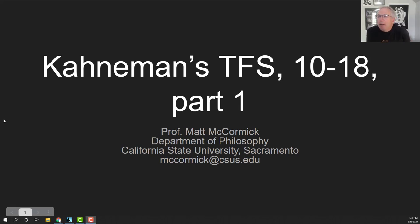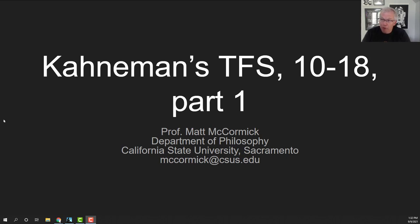Hi, this is Matt McCormick. I'm in the Department of Philosophy at California State University, Sacramento. My email address is mccormick@csus.edu. This is my lecture on Daniel Kahneman's book, Thinking Fast and Slow, Chapters 10 through 18. This is Part 2 of his book, about biases and heuristics. I'm going to have two lectures on this section, so this is Part 1 covering chapters 10 through 18.